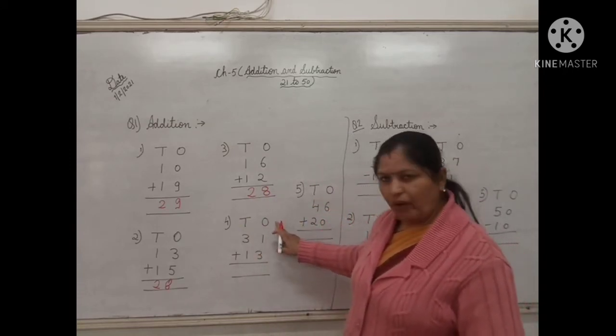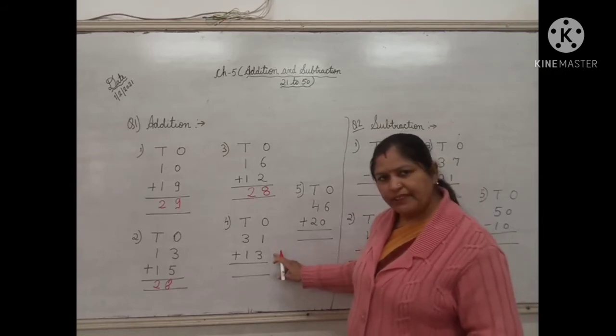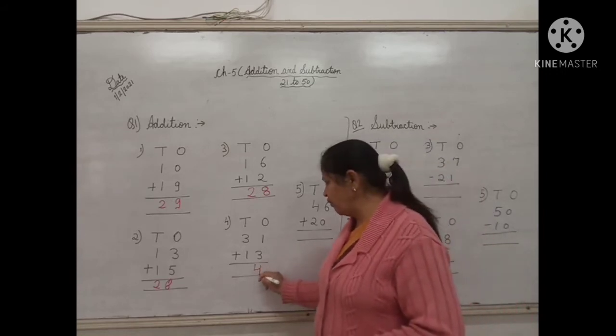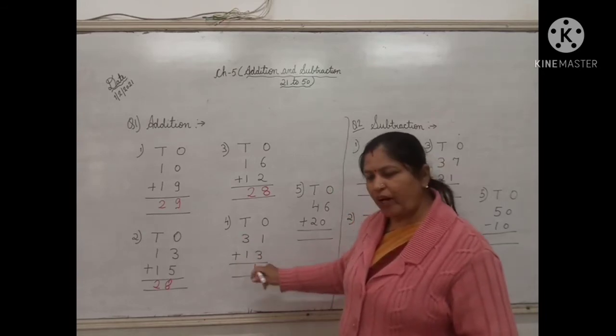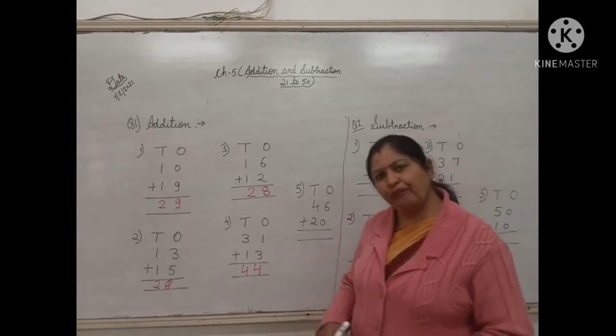Fourth one. In the ones digit, the number is 1 and 3. 1 plus 3, that is 4. And 3 plus 1, that is also 4. So what is the answer children? The answer will be 44.